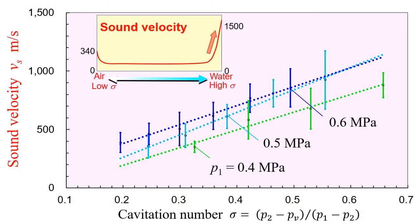When the speed of the pressure wave — that is, the sound velocity — was measured, sound velocity was found to increase with cavitation number, because the void ratio was decreased.